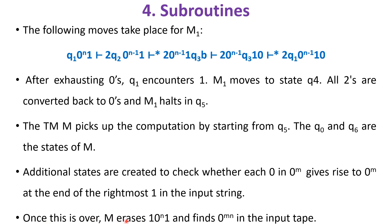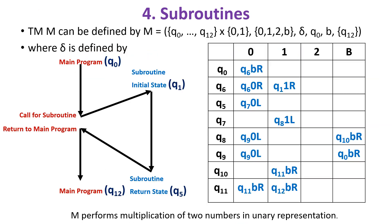Once this is over, M erases 1 0^n 1 and finds 0^mn in the input tape. The Turing machine M can be defined by M = (Q0, Q1, Q2...Q12 states, summation as 0, 1, tape symbols are 0, 1, 2, and B, delta transitions are represented in the form of transition table, initial state is q0, blank symbol as B, final state is Q12). M performs multiplication of two numbers in unary representation.